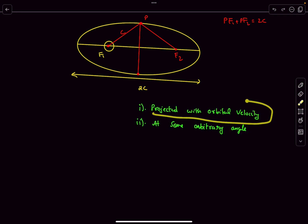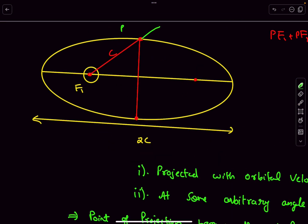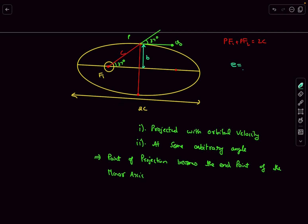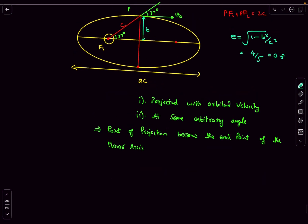If a satellite is projected with orbital velocity at an arbitrary angle (not perpendicular) to the radius vector, the point of projection becomes the endpoint of the minor axis. The velocity v0 is tangent to the elliptical path at this point, making an angle of 37° with the radius vector. So b/c = sin 37°. The eccentricity is √(1 − b²/a²) = √(1 − sin²37°) = cos 37° = 4/5 = 0.8.